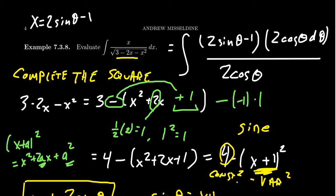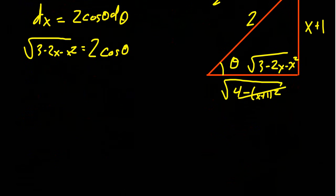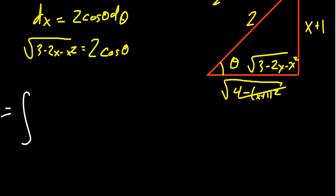So simplifying, the 2 cosines from the top and bottom cancel out. And I'm going to bring this to the bottom. Turns out, despite completing the square, we actually got quite a benign integral here. We just have to integrate 2 sine theta minus 1 d theta, which by its typical rules of antiderivatives, antiderivative of 2 sine theta will be a negative 2 cosine theta. Antiderivative of negative 1 is a negative theta. We get plus a constant there.